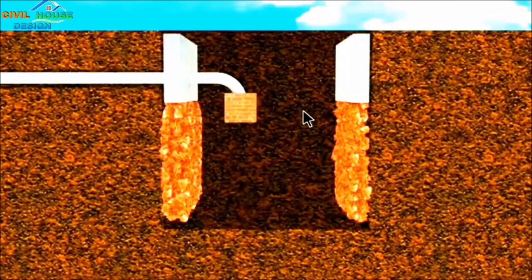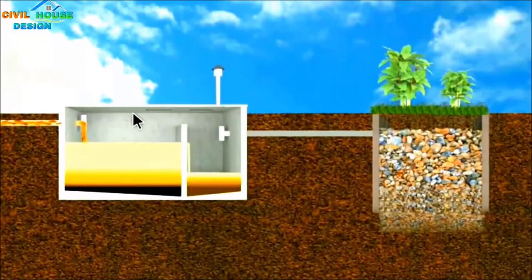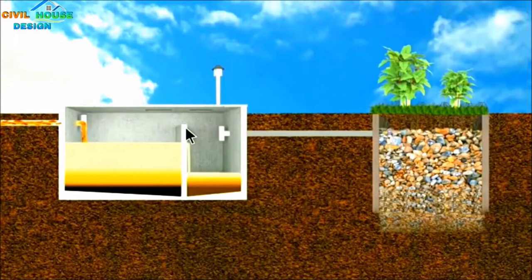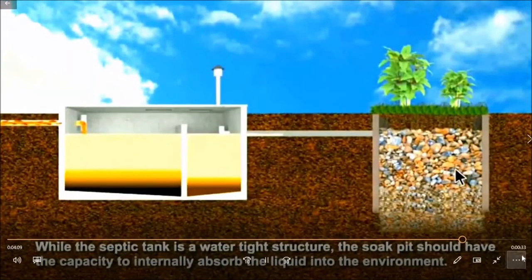We leave holes in the brickwork so that the waste water seeps out. The outlet pipe is in the middle and connects to the soak pit chamber. Porous material such as brick is used in the soak pit construction. Waste material fills the lower layers and the upper material seals the top. The waste water above the outlet level will enter the soak pit.